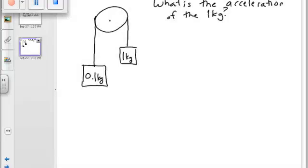Obviously the 1 kg block is going to go down, so the first thing you do is identify the direction of acceleration. This way is positive. So that means for the 0.1 kg side, up is going to be positive, and for the 1 kg side, down is going to be positive. So the direction of acceleration is positive depending on the object.